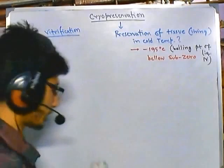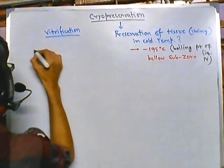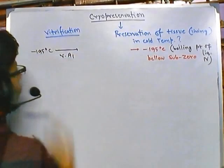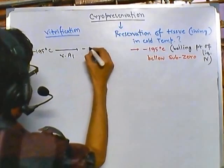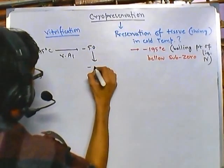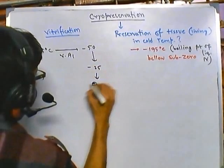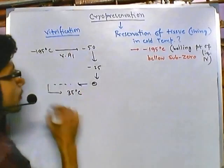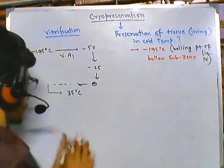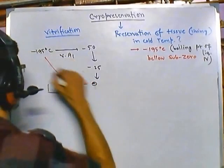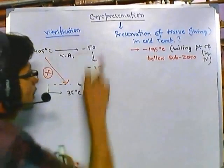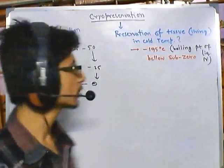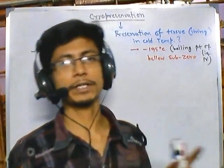In the vitrification process, we do a step-by-step increment of temperature. For example, starting from minus 195 degrees Celsius, we add vitrification solution one and the temperature comes to say minus 50, then minus 25, then around zero, then slowly increasing towards 35 degrees Celsius. We don't go directly in one step because that pathway is very dangerous. We take small stages because it helps to maintain the cells stable. So that is the vitrification process.